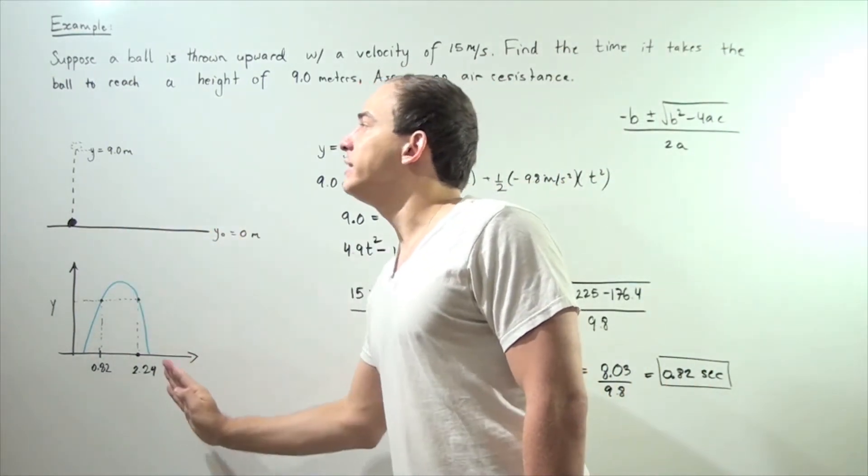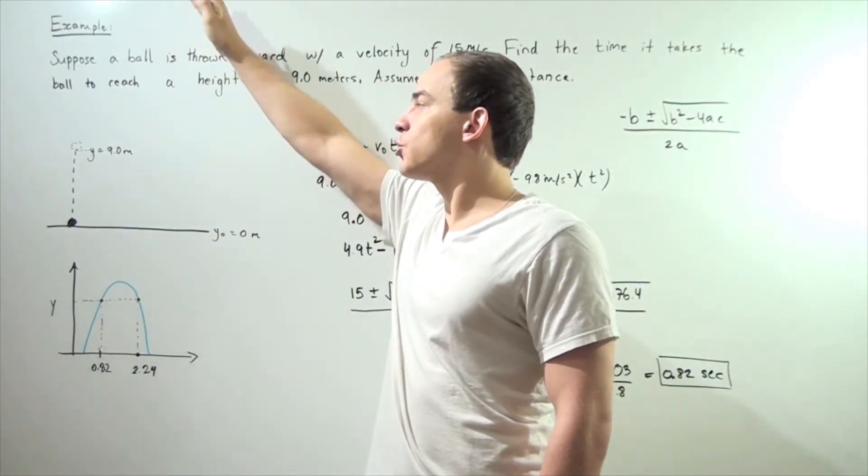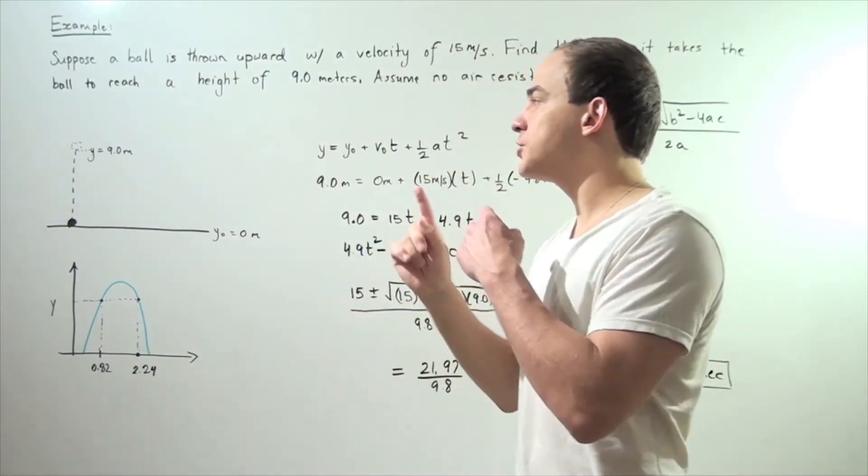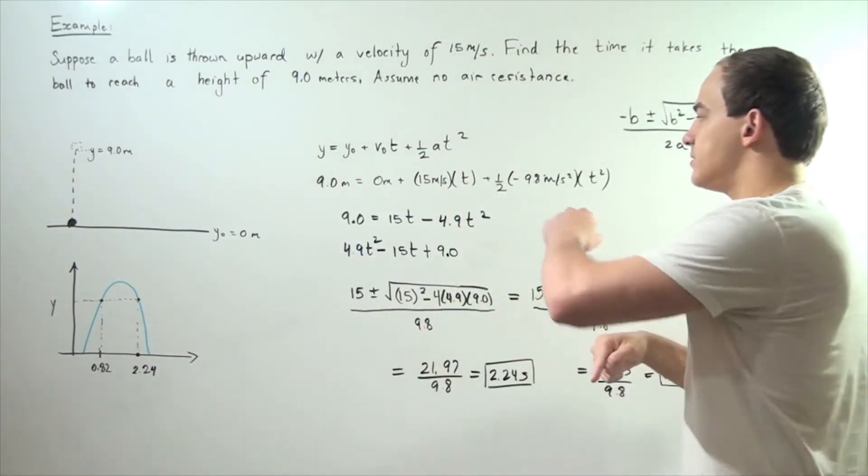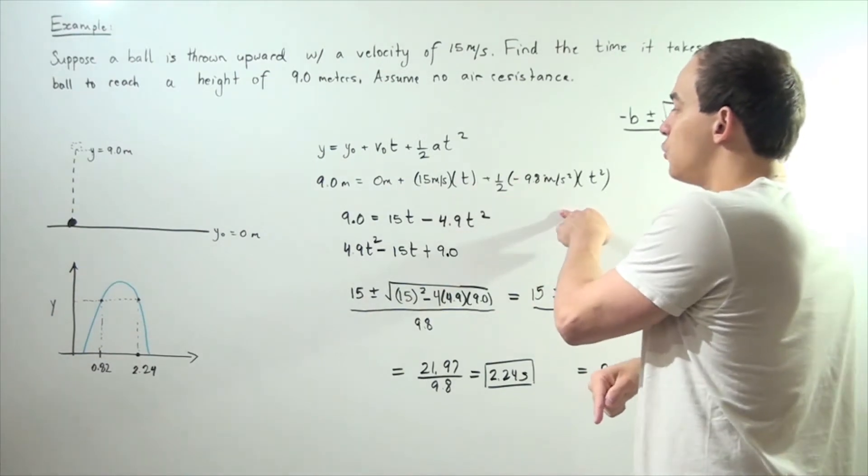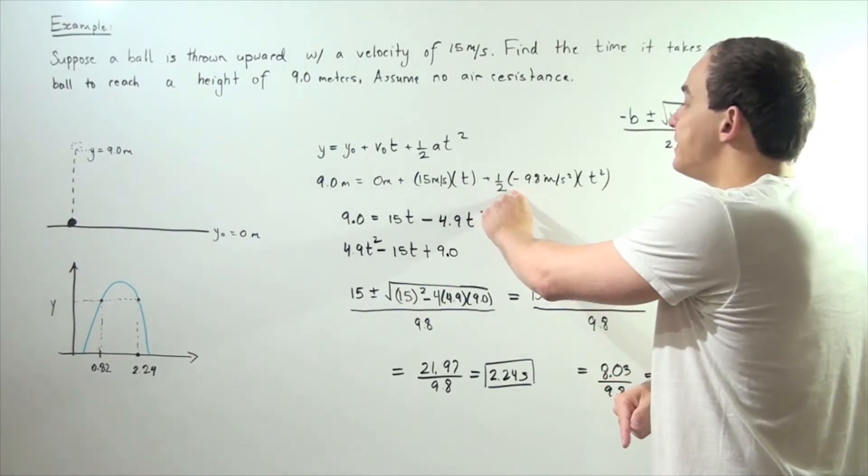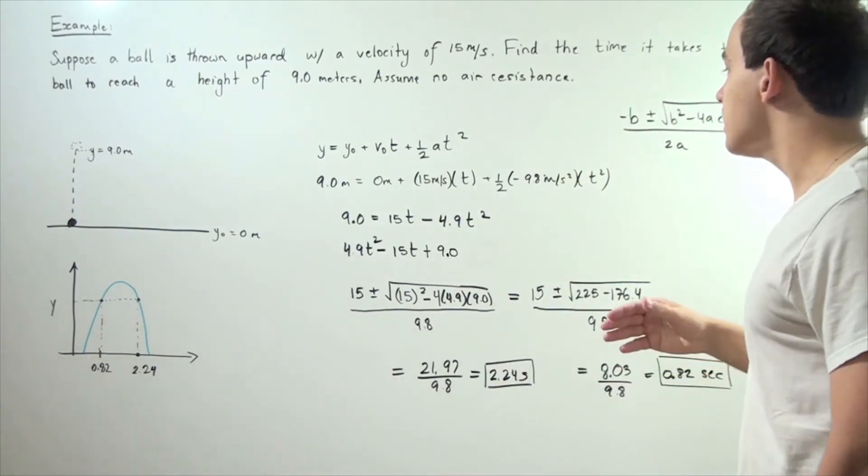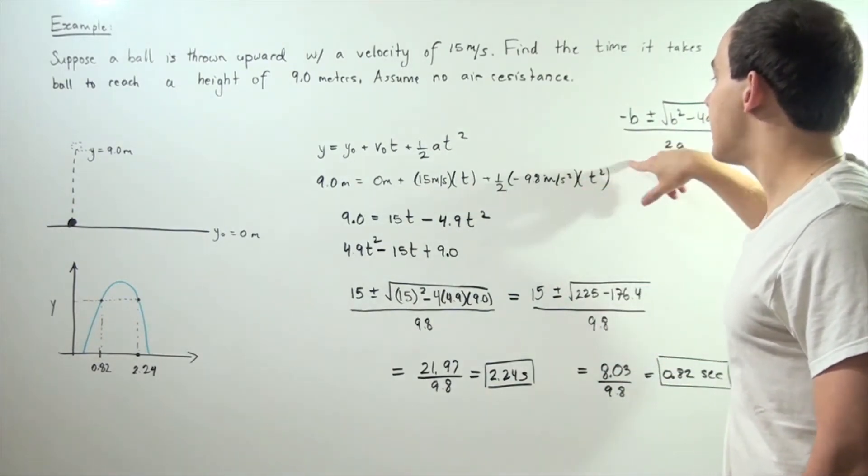Our velocity is pointing upward and our acceleration due to gravity is pointing downward. Because the directions are opposite, that means our value for our acceleration must be negative. So negative 9.8 meters per second squared multiplied by time squared.